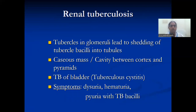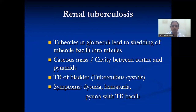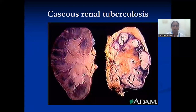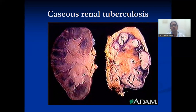Renal tuberculosis can also present as secondary tuberculosis. Tuberculosis in the glomeruli, pelvis, ureter, and bladder — symptoms include hematuria, oliguria, and pyuria. This is a picture of caseous renal tuberculosis.